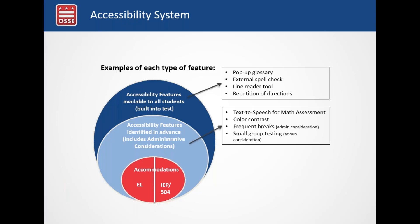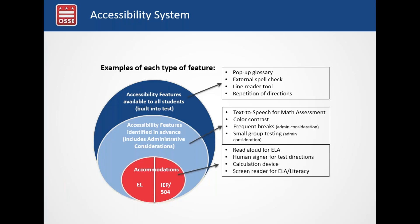Accessibility features that must be identified in advance in the student's personal needs profile include text-to-speech for a math assessment, color contrast, breaks as a test administration consideration, and small group testing. Combinations you might find in an EL plan, IEP, or 504 include read aloud for ELA, a human signer for test directions, use of a calculation device, and a screen reader for ELA. These must be identified in advance and appear in the IEP or EL plan, and identified through student registration via the personal needs profile. The guidance for student registration has been updated for 2019 test administration.